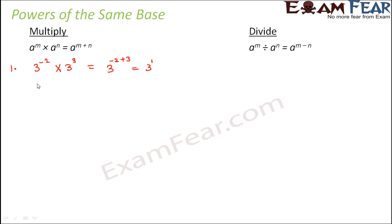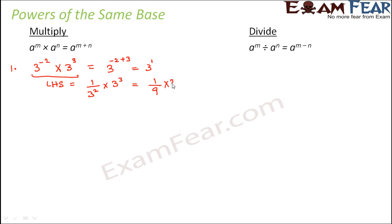We can verify this: the left hand side is 1 by 3 squared into 3 cubed, which equals 1 by 9 into 27. Since 9 into 3 is 27, this gives 3. The right hand side is also 3, so this proves the law of exponents holds true.